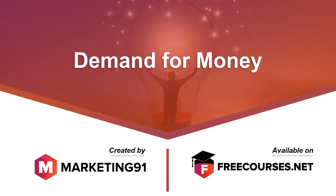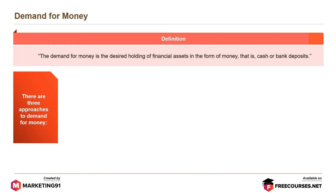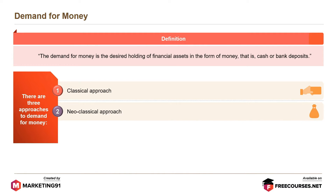Hello and welcome to marketing91.com. By definition, the demand for money is the desired holding of financial assets in the form of money, that is, cash or bank deposits. There are three approaches to demand for money: classical approach, neoclassical approach, and Keynesian approach. Let's understand each of these approaches in detail.